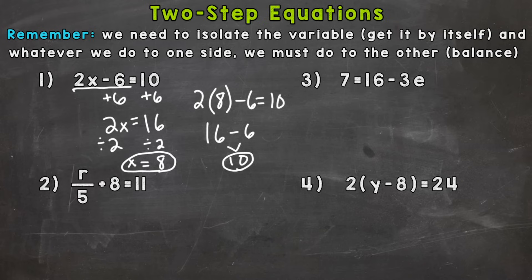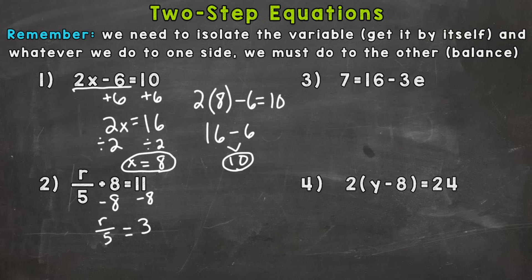For number 2 we have r divided by 5 plus 8 equals 11. We need to get that r by itself, so let's use the reverse order of operations to undo the left side. Let's get rid of that 8 first — we have plus 8, so the opposite is to subtract 8 from both sides to begin isolating r. A positive 8 minus 8 gives us 0, and 11 minus 8 gives us 3. On the left side we're left with r divided by 5.